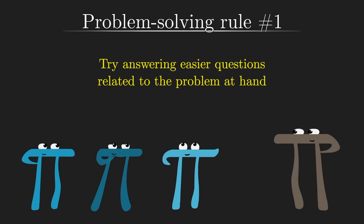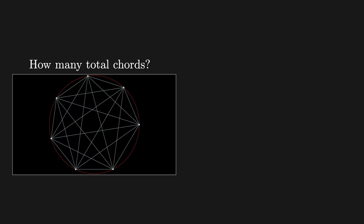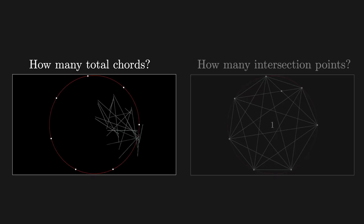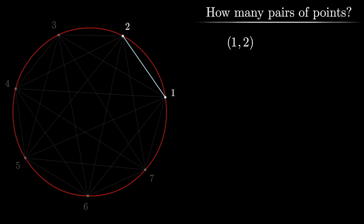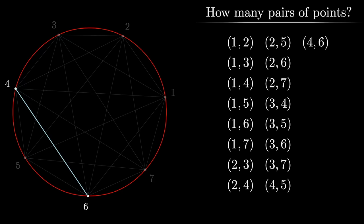In this case, two warm-up questions that come to mind are, how many total chords are there in this diagram? And, at how many points within the circle do those chords intersect each other? The first question is relatively friendly. Every one of those chords corresponds uniquely with a pair of points on the circle.